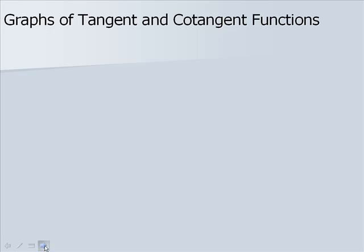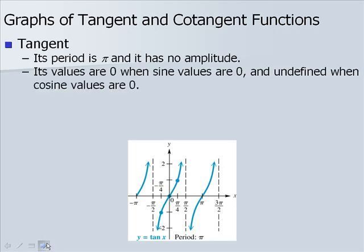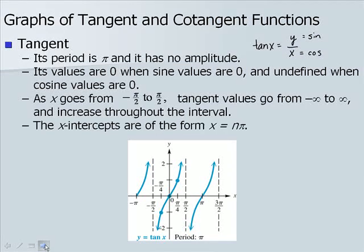Now let's look at the graphs of tangent and cotangent. The tangent function has period π with no amplitude. Its values are 0 when sine values are 0, and undefined when cosine values are 0 — because tangent of x equals y over x, where y is sine and x is cosine, so if cosine is 0 we're dividing by 0. As x goes from negative π/2 to positive π/2, tangent values go from negative infinity to positive infinity and increase throughout the interval. The x-intercepts are of the form x equals n times pi.